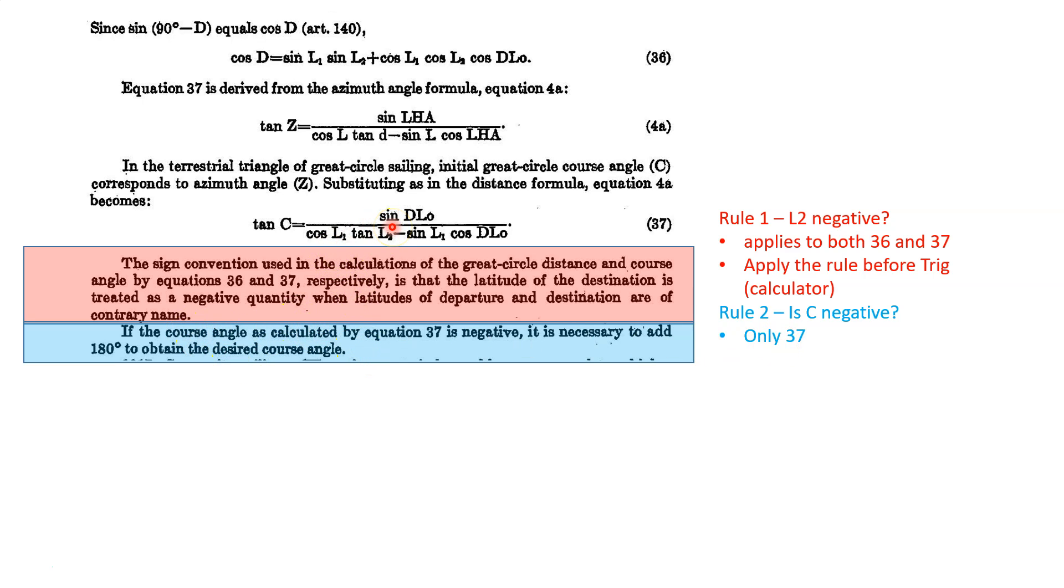How does this rule work? It's only for 37. If the course angle is calculated, so after I do this formula, I get a negative number, it is necessary to add 180. So I add 180 to that, and I'll have a positive number. Great. That's rule 2. And you apply it after the trig and only to Formula 37.